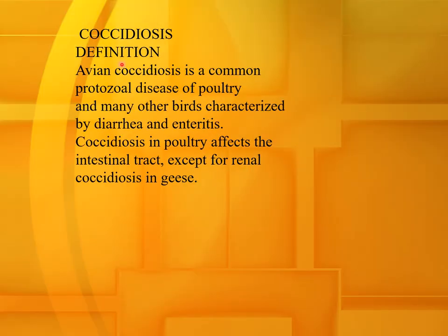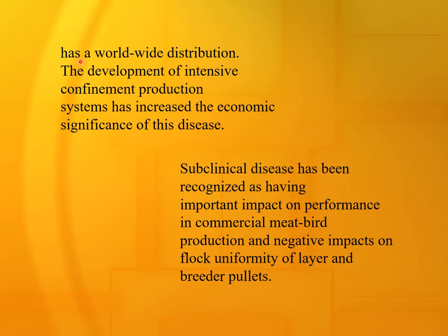Coccidiosis — definition. Avian coccidiosis is a common protozoal disease of poultry and many other birds, characterized by diarrhea and enteritis. Coccidiosis in poultry affects the intestinal tract, except for the renal coccidiosis in geese, which affects the kidney. It has a worldwide distribution.